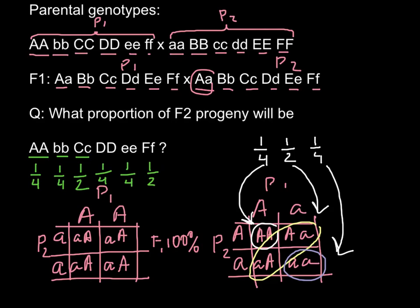Now how are we going to calculate our probability? We have to multiply all these independent probabilities, and this is how we are going to get our answer. So: 1/4 multiplied by 1/4 is 1/16, multiplied by 1/2 is 1/32, multiplied by 1/4 is 1/128 — wait, this is 1/512 — multiplied by 1/2 is 1/1024. You can also calculate the probability as a percentage by dividing 1 by 1024.